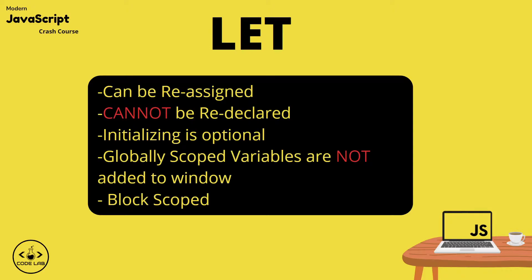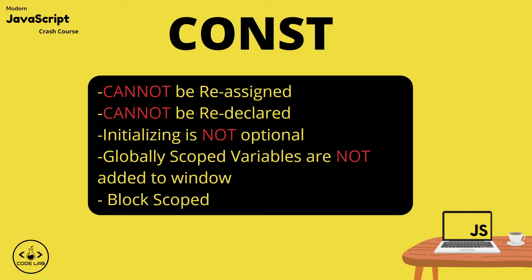The let keyword has similarities but differs slightly from var — it can be reassigned like var, however it can't be redeclared, the initialization is optional, but globally scoped variables are not added to the window, and unlike var, let is block scoped. The const keyword is pretty much the complete opposite of var — it can't be reassigned, it cannot be redeclared, the initialization is not optional, globally scoped variables are not added to the window, and const is block scoped. I'll speak about block scope and function scope in just a moment.